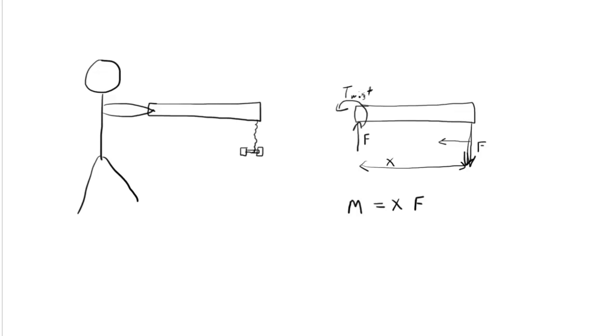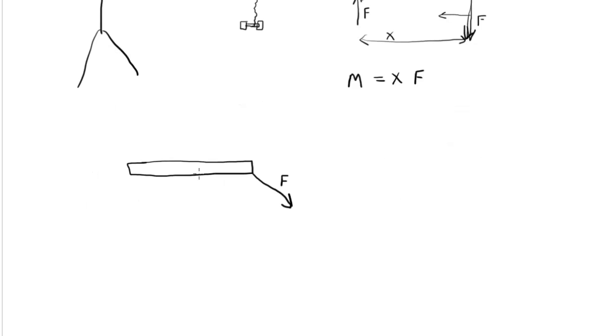What happens, however, if we're not applying the force in this straight up and down direction? What if, in fact, we have this situation? The force is angled relative to the direction of the bar, not at 90 degrees.